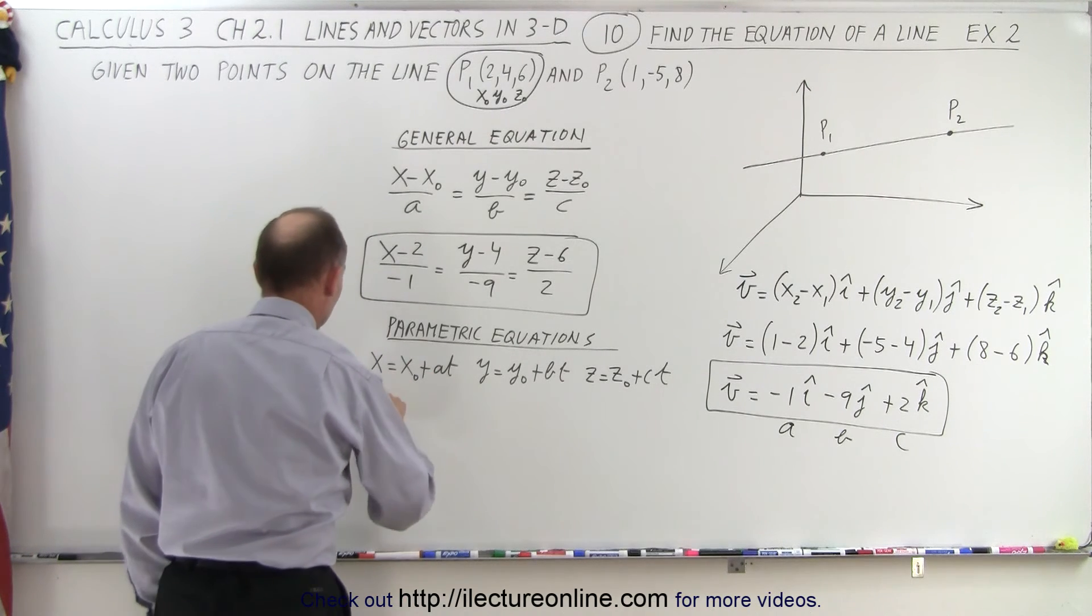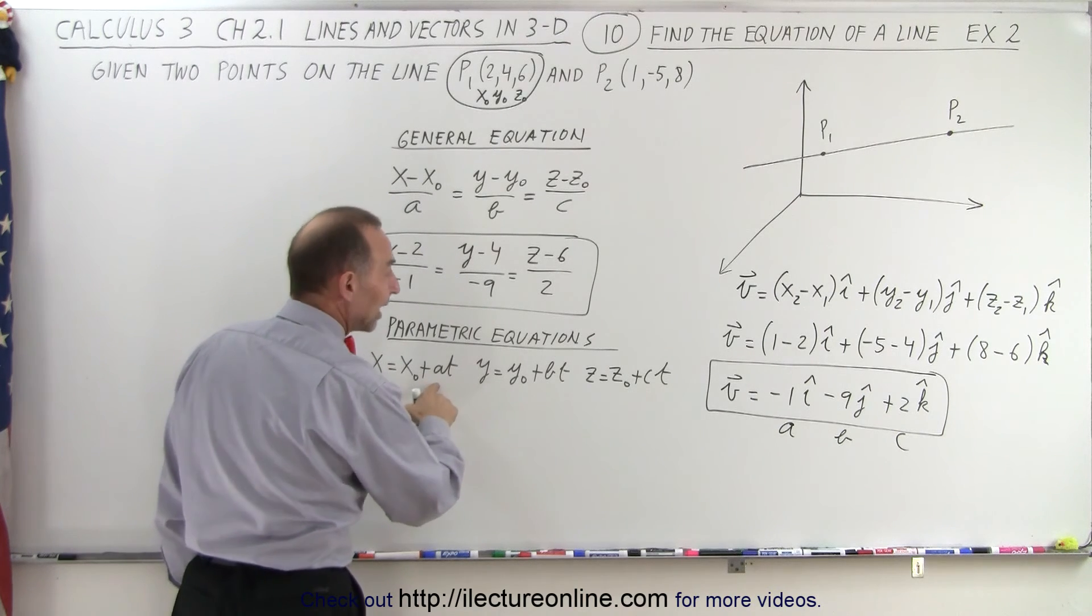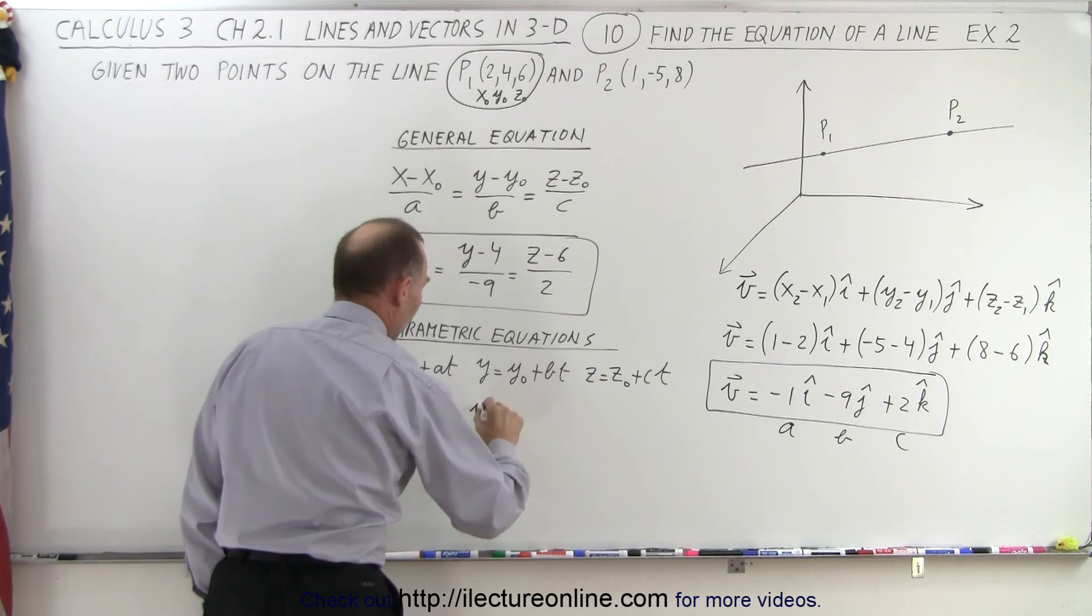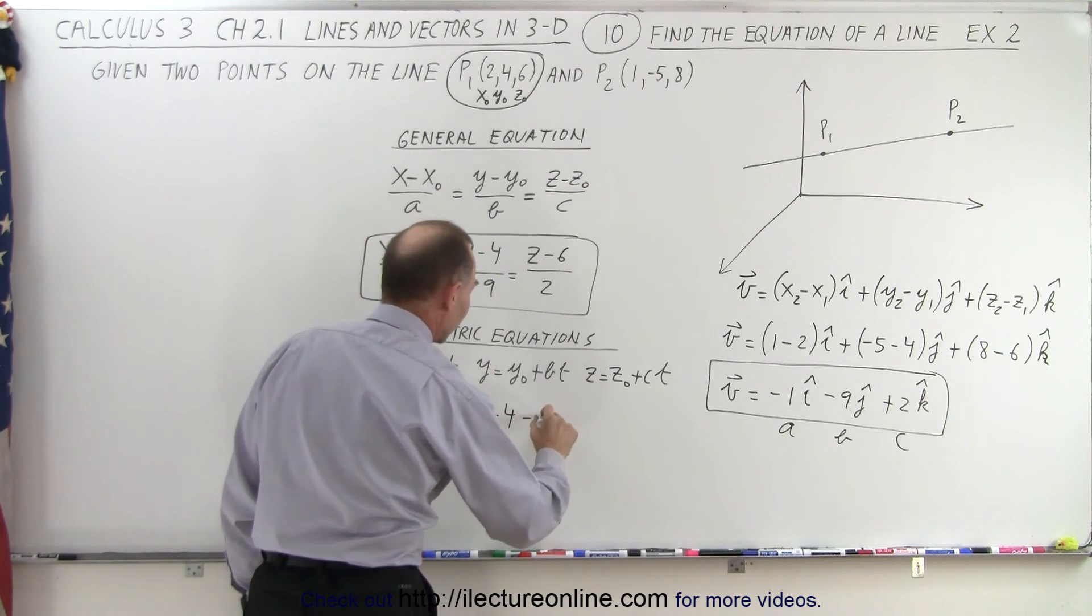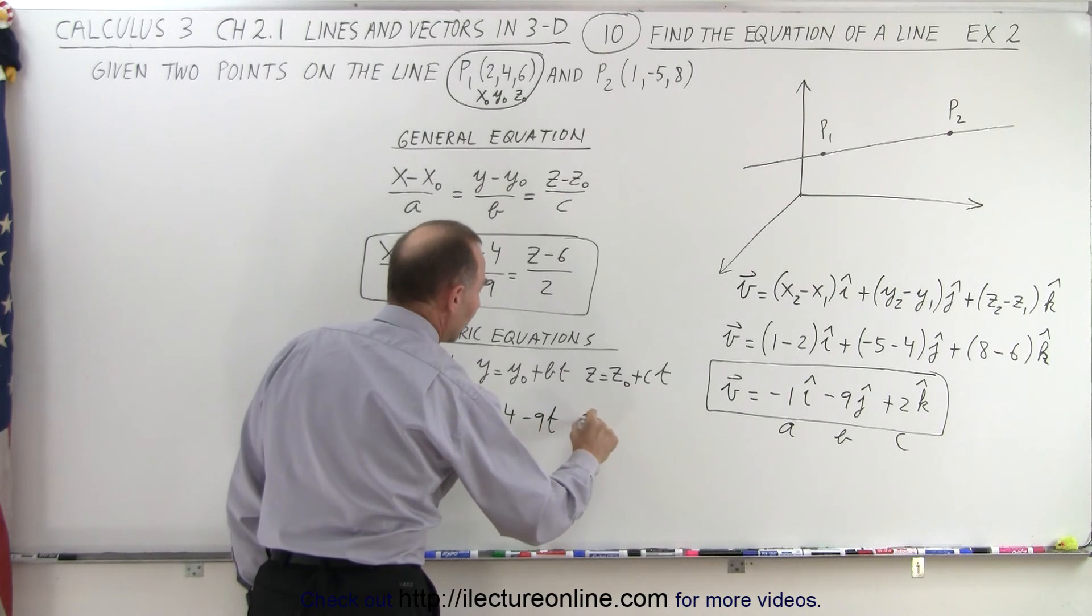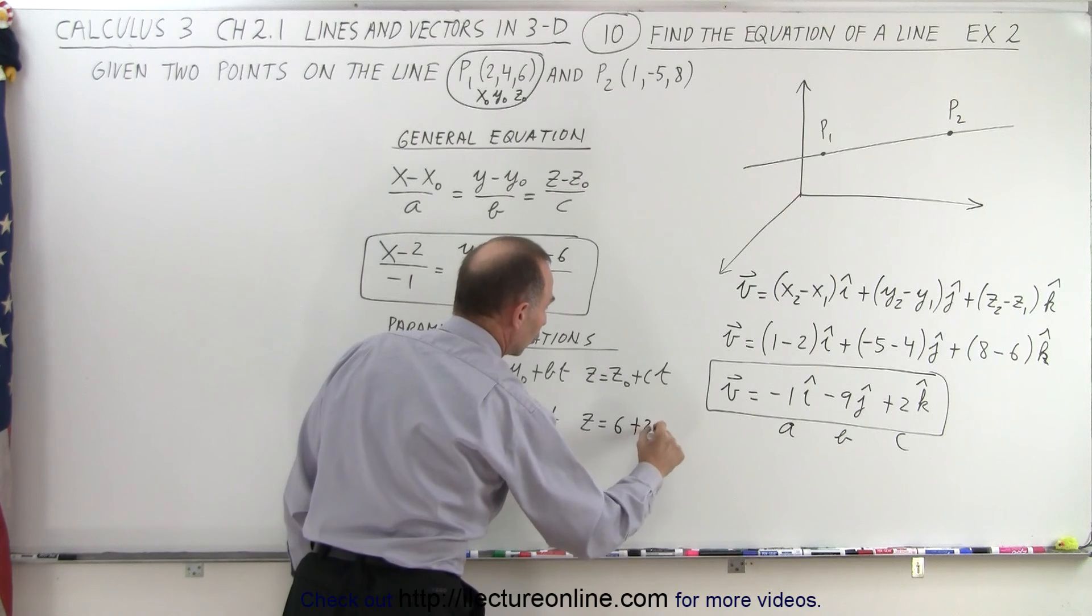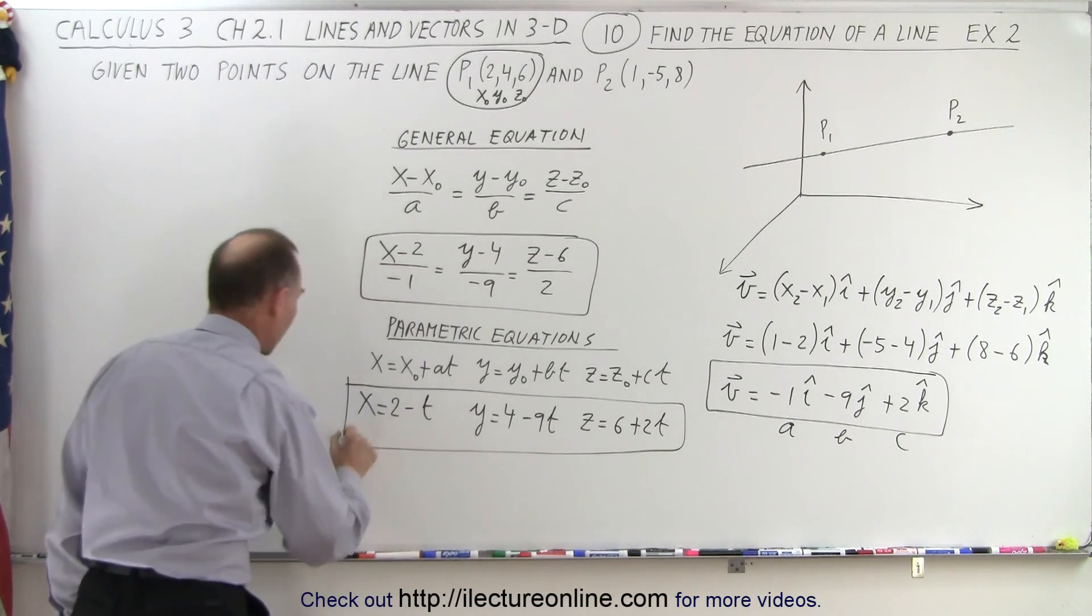And so plug in those values, we get x equals x sub 0, which is 2, plus a t, but in this case a is minus 1, so minus t. y equals y sub 0, which is 4, plus b, which is minus 9 times t, and z equals z sub 0, which is 6, and plus 2t. And here are the three parametric equations of that line.